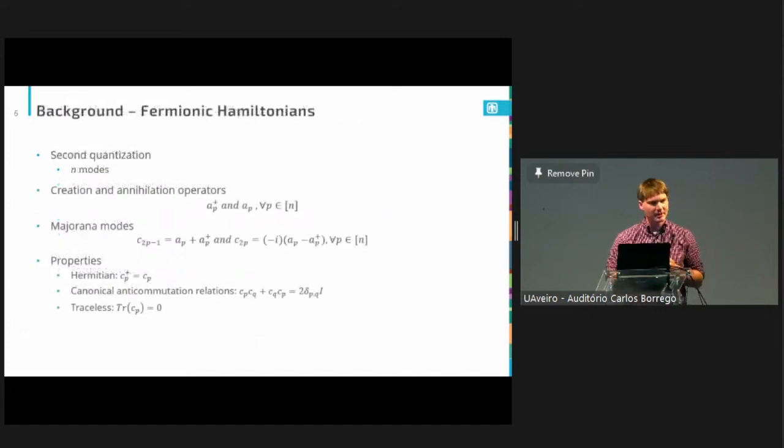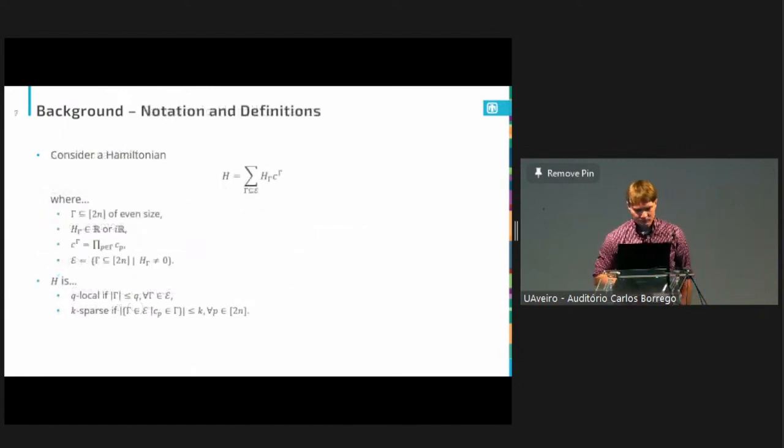They focused on sparse two local Hamiltonians. And what they were able to do is give a graph-based constant factor approximation. Our work, again, really takes that work to the next level. It simplifies a lot of their algorithm, and it expands the class of Hamiltonians that you can consider. So really think of this work as marrying the Harris Semenko work with the Harrow and Montanaro work I talked about earlier. Just so we're on the same page, here's a little bit of background on fermionic Hamiltonians. Throughout this talk, we're going to be writing everything in the second quantization. We'll always be considering n modes of fermions.